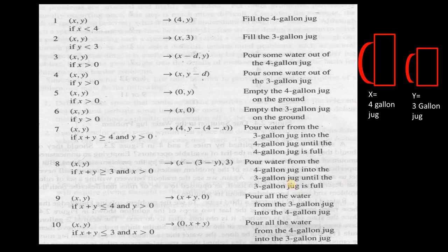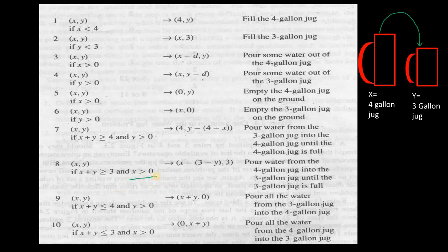For rule 8, the preconditions are x > 0 and x + y ≥ 3 — the combined water must be at least 3 to fill the 3-gallon jug. After the action, the 3-gallon jug will be full (y = 3) and the remaining water in the 4-gallon jug will be x - (3 - y).